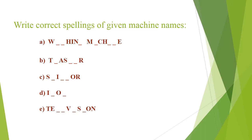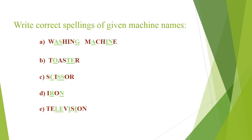Number C is Scissor. Very good. And number D — it is Television. Let's see: what is the machine? A is Washing Machine, B is Toaster, C is Scissor, D is Iron, and number E is Television. Very good.